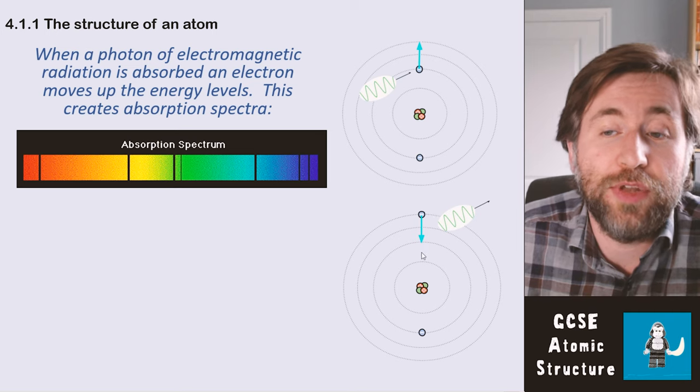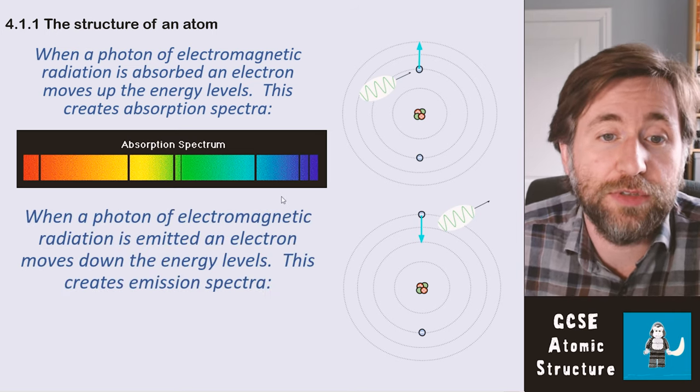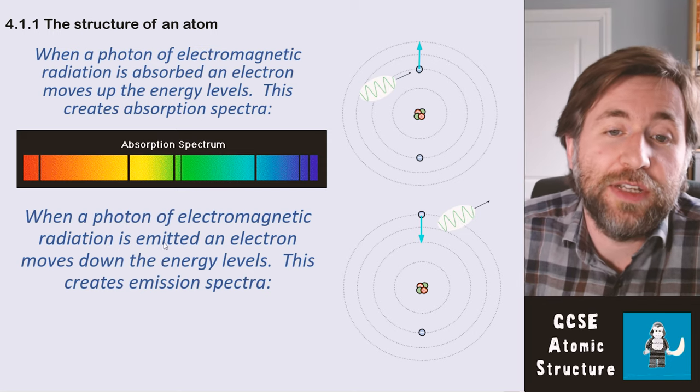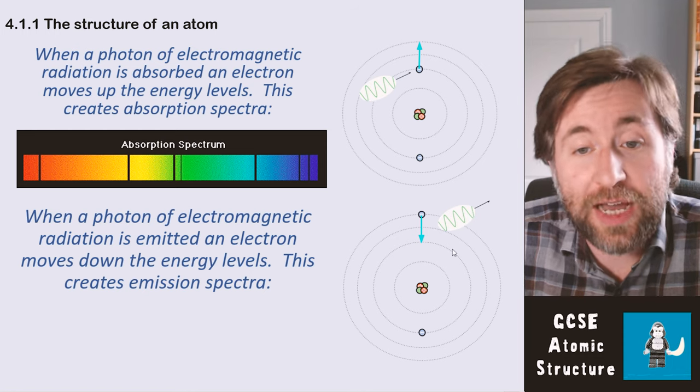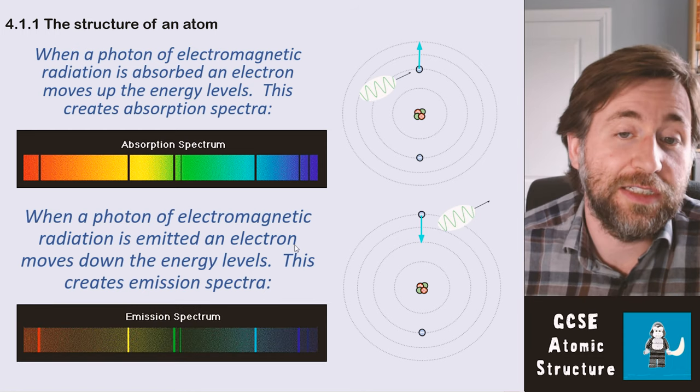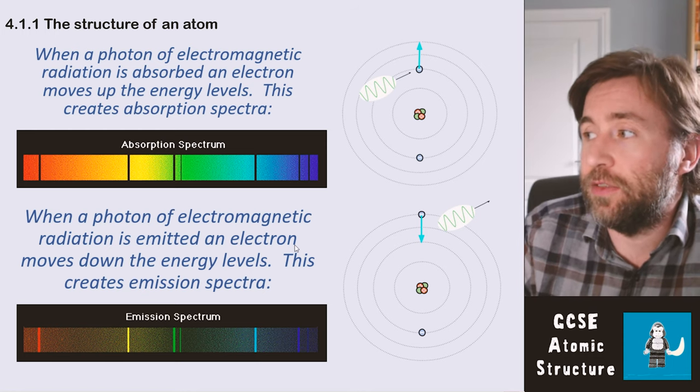Once that electron is up there on the higher energy levels, it can also fall down. When it falls down energy levels, it emits light—it gives out photons. So when a photon of electromagnetic radiation is emitted from an atom, an electron moves down the energy levels, and that creates these things called emission spectra.